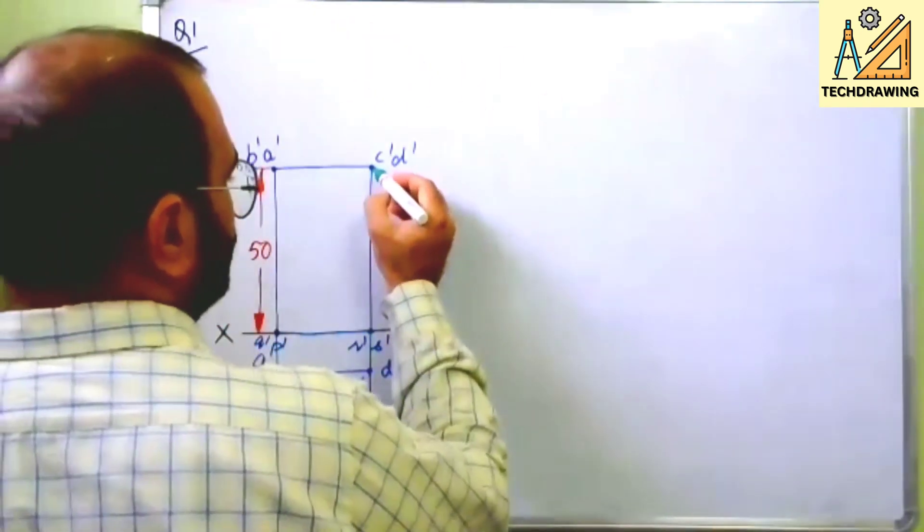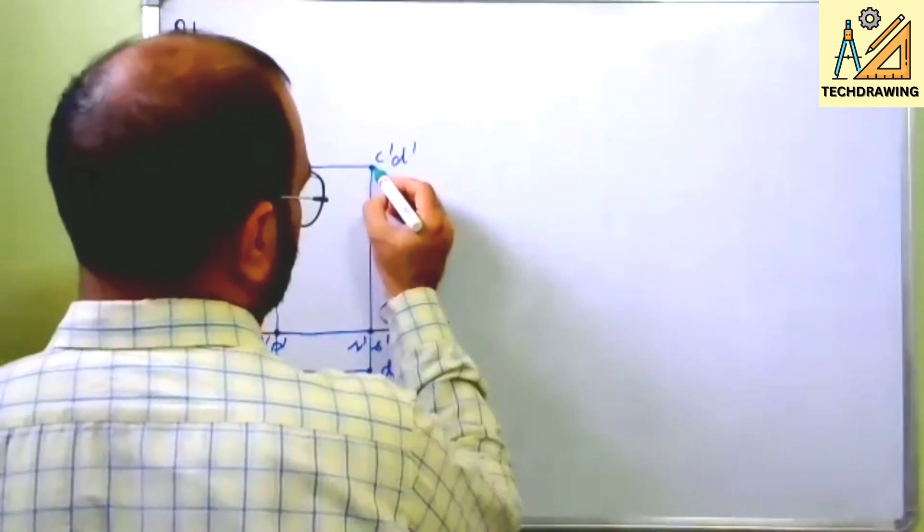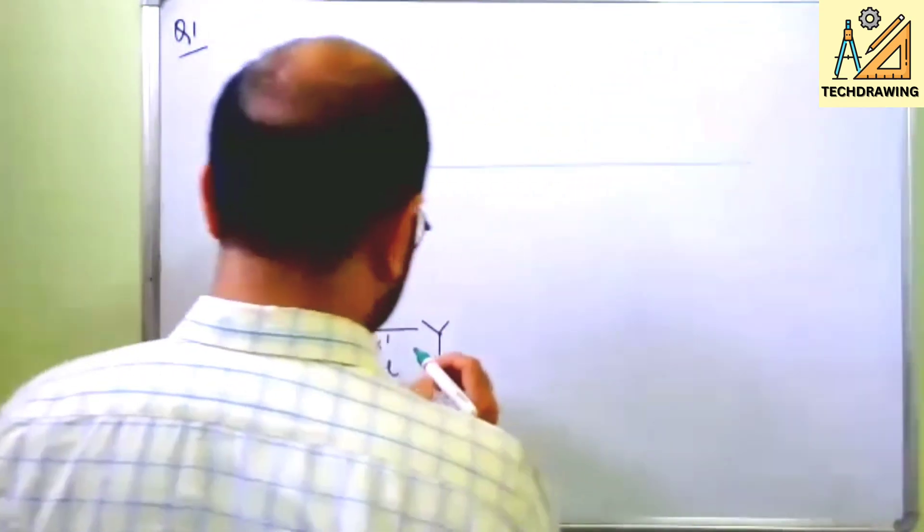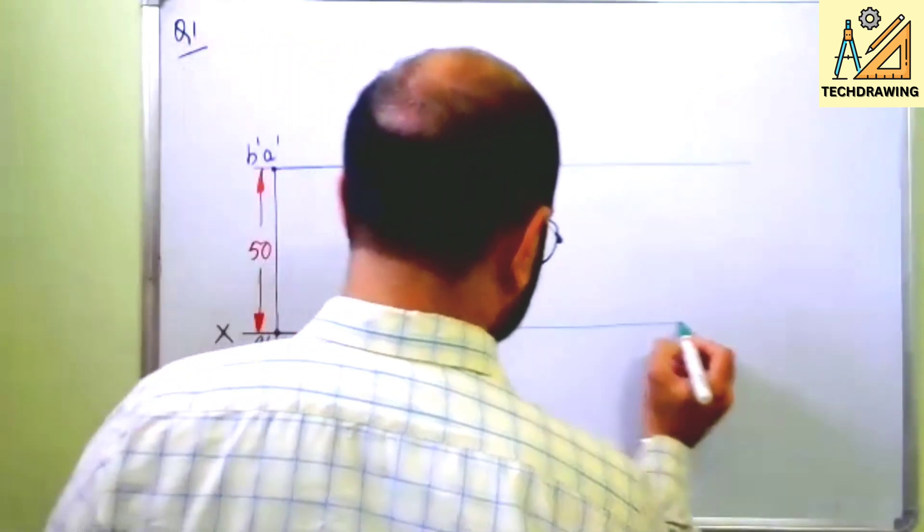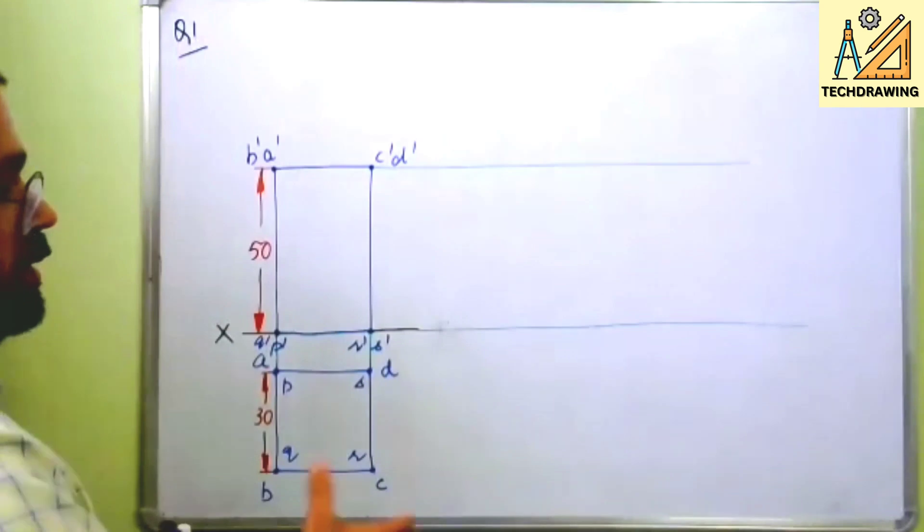So this BQ, this longer edge will be on left side also and this will be at the right side also. So now what is parallel line method? You just have to draw projection lines from here, parallel line like this. From here you draw the parallel lines. These two lines are parallel to each other.